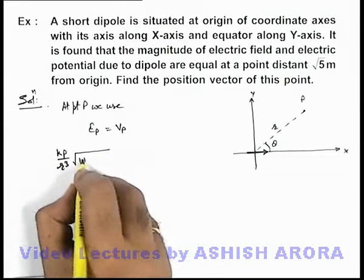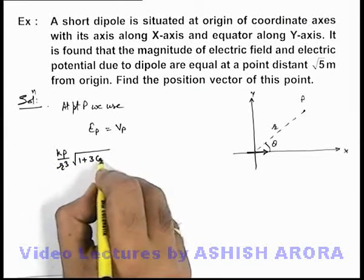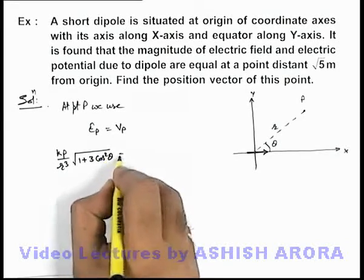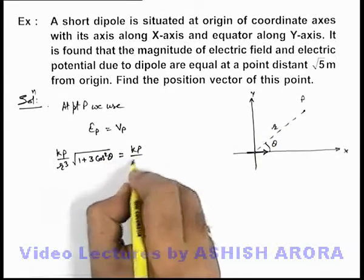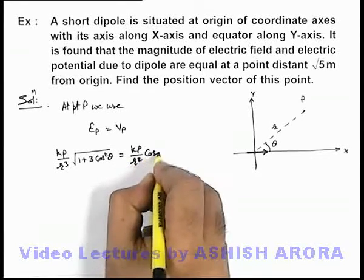And the potential at point P can be given as kP/r² cosθ. Here, just remember that θ is the angle which is taken from the axis of the dipole.